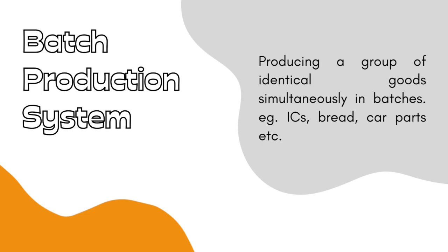So a group of identical goods are produced simultaneously in batch production. The advantages are that a large variety of products can be manufactured with the same equipment — with the same oven and batter you can bake cupcakes or cakes in batches — with comparatively low capital investment. The disadvantages are high inventory and storage requirements because of this large variety, and idle time between batches. For the whole time between batches, your oven and mixer machines will be sitting idle.